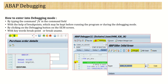The second option is with the help of breakpoints, which we can set before running the program or during the debugging mode. Before executing the program we can set the breakpoint, or once we are in debugging mode we can also set the breakpoint. You can use the exit debugger icon. The next option is on the SE38 screen, where we have a debugging button — clicking it takes you directly into debugging mode.